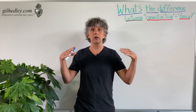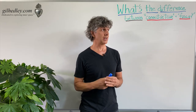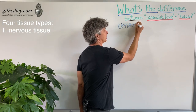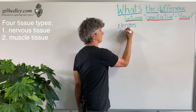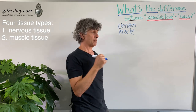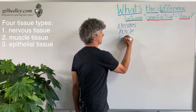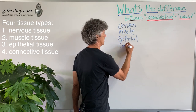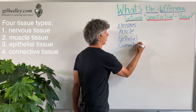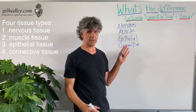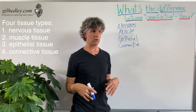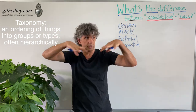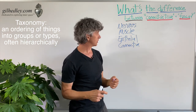Anatomists generally categorize the tissues of the body into four types: nervous tissue, muscle tissue, epithelial tissue, and connective tissue — four tissue types. Each one of these has subsets or subcategories. This is taxonomy, where you have big categories at the top and then items in a flow chart underneath them. So the taxonomy of the tissues of the body goes something like this.